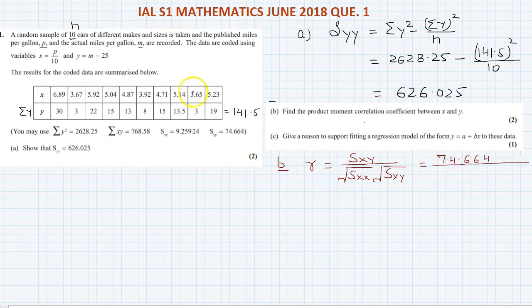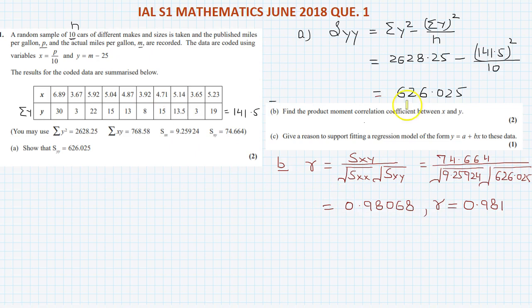Divided by root S_xx, root 9.25925924, multiplied by S_yy, we have just calculated. S_yy is 626.025. So that is equal to 0.98068 and so on, so we can write it that is equal to 0.981. So the value of r is 0.981.